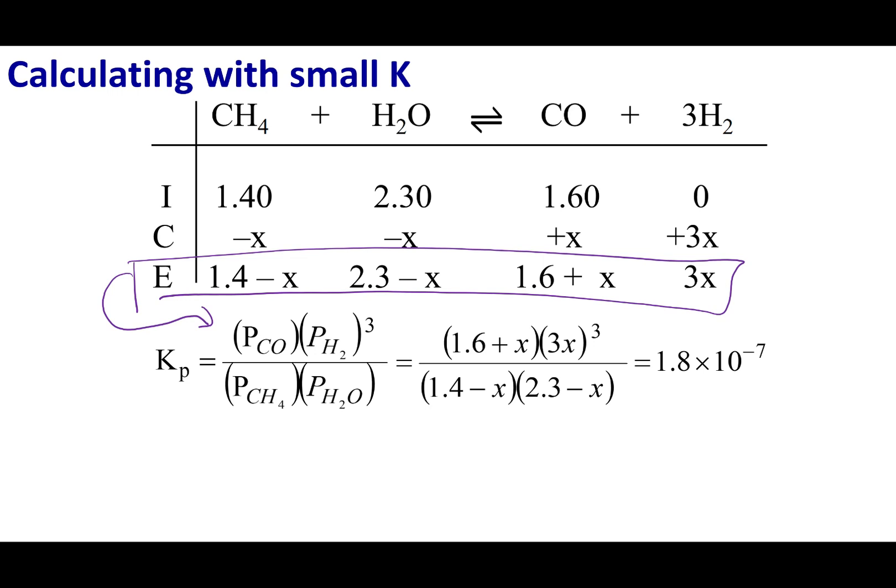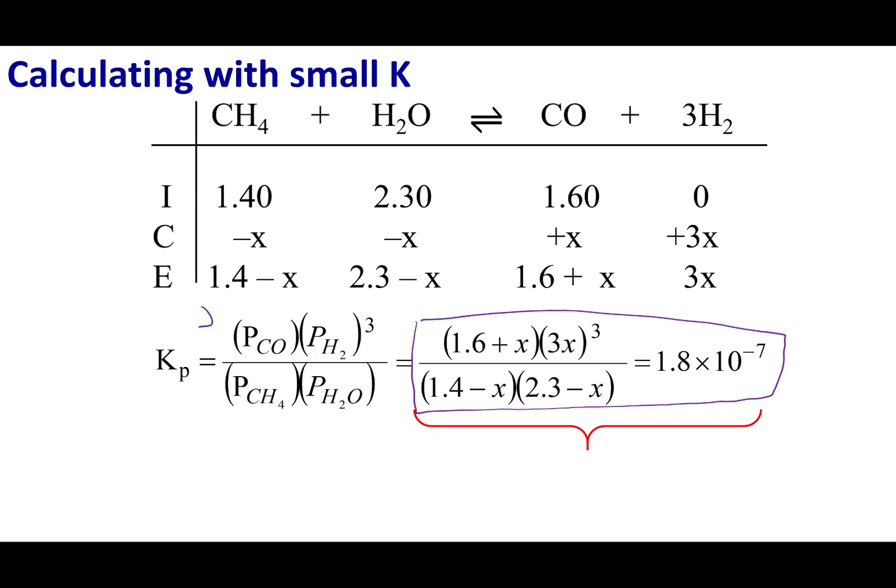Now we can put our equilibrium pressures into our Kp expression. Here's what I get. Now you see the problem that I want to discuss with you. I want to solve for x. Look at what a mess we have in this problem. We've got x to the third times 1.6 plus x, so I'm going to get a fourth degree polynomial. I have to foil the bottom. This is a really tough problem.